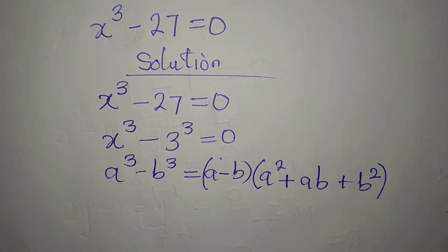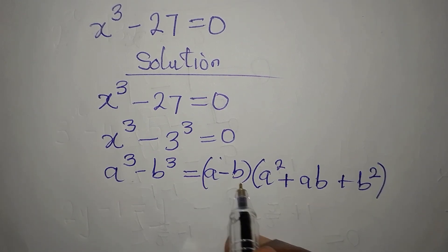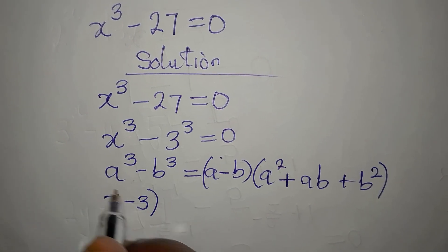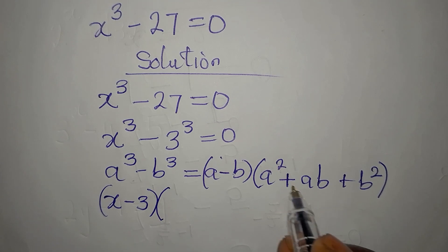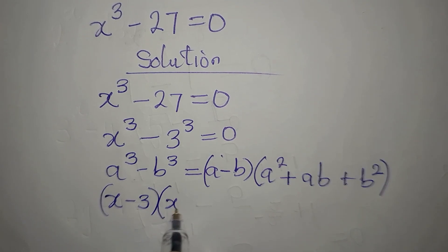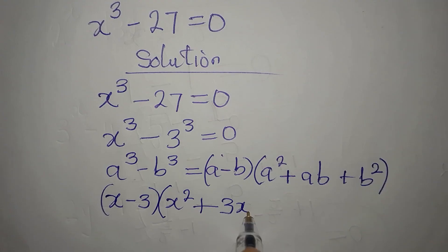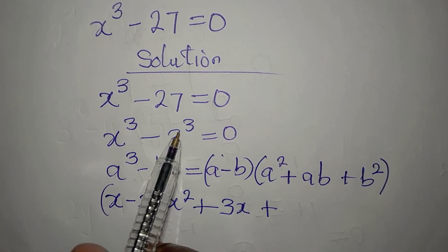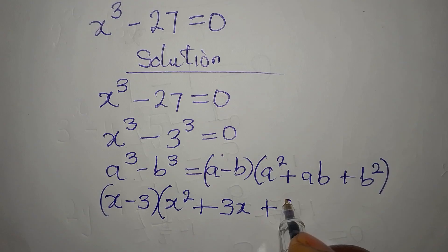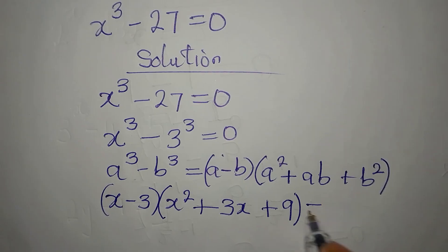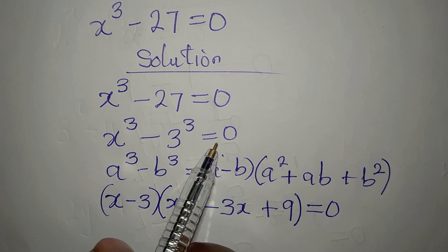So proceeding from here, a minus b will become x minus 3, so we write x minus 3. Then a squared is x squared, plus ab which is x times 3, that is 3x, plus b squared which will be 3 squared, and that is 9. So we equate this to 0, because we have 0 over there.